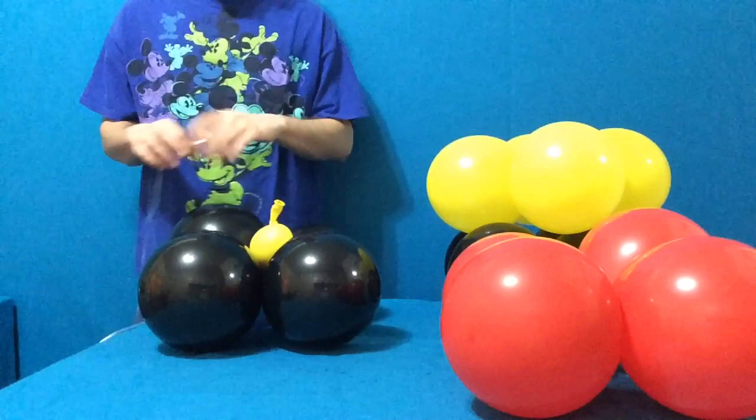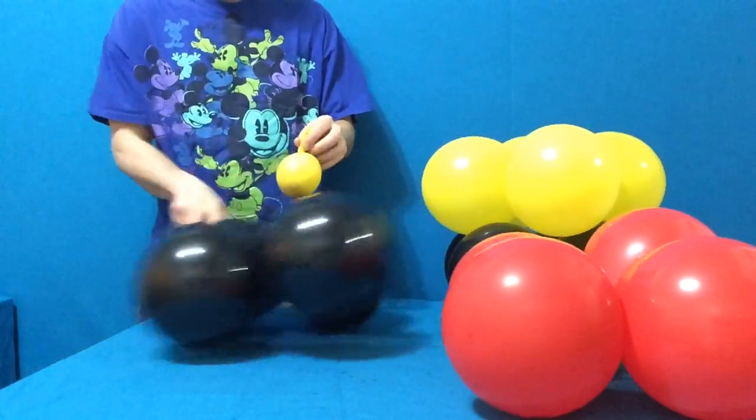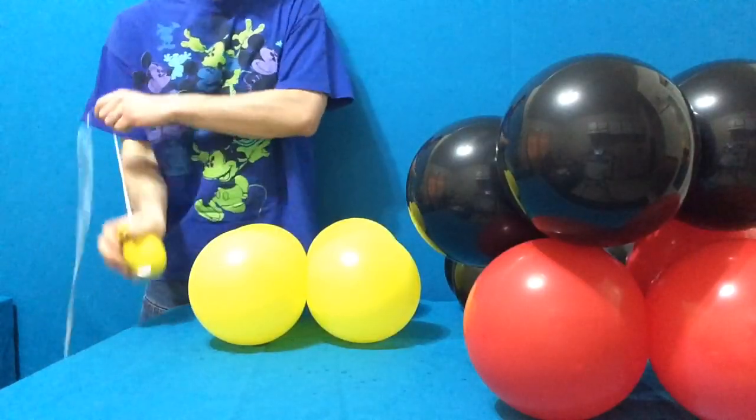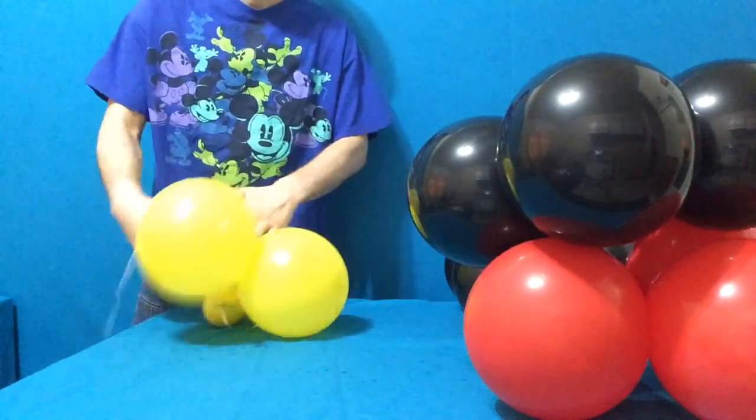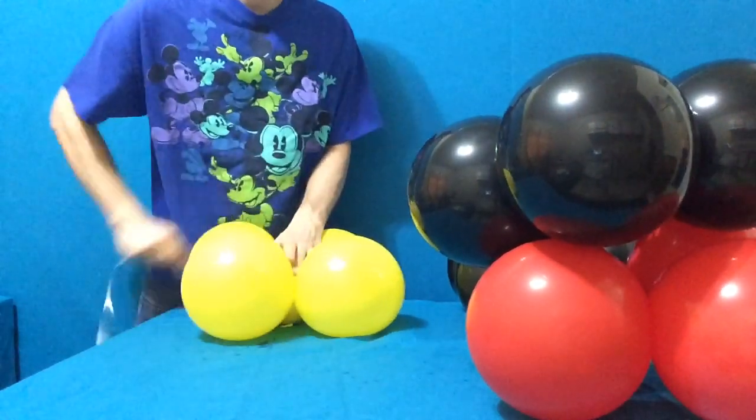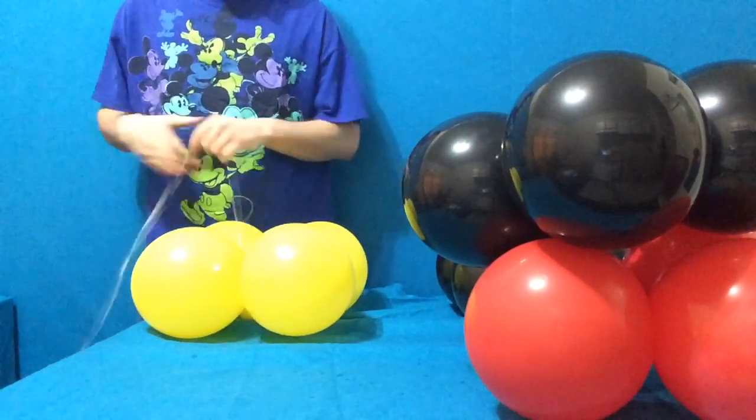Double knot the end of a length of balloon ribbon under the knot on the weight. Slide the weight into the center of the base quad, yellow for Mickey's shoes, and wind it around one of the balloons. I'm going to show you how easy this actually is.